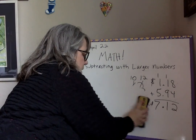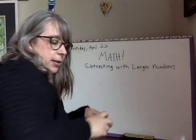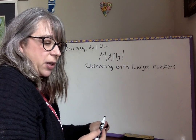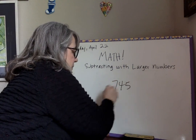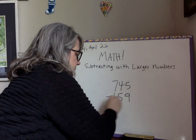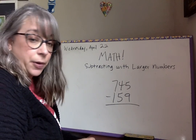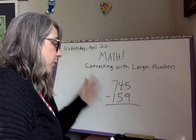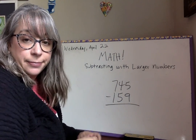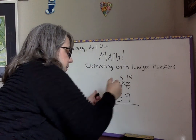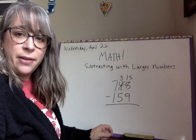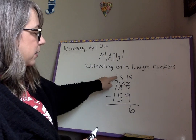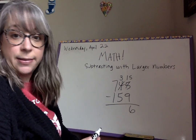This is the old-fashioned way of subtracting. Let's do one more. Seven hundred and forty-five minus one hundred and fifty-nine. We're doing a lot of borrowing — great practice. Remember, you cannot flip any numbers. You can't take nine out of five, so we borrow — that becomes a three and that becomes a fifteen. Fifteen minus nine is six.